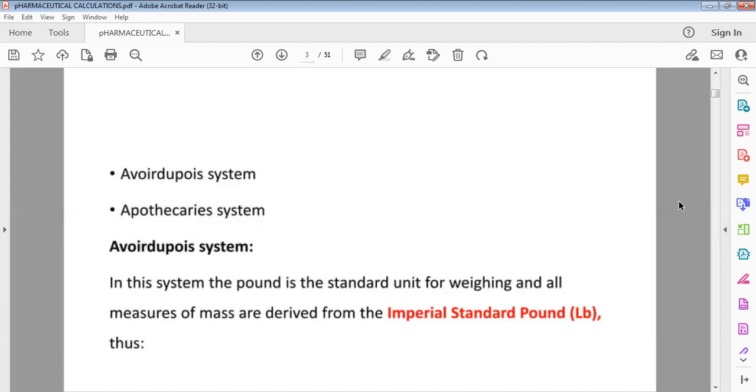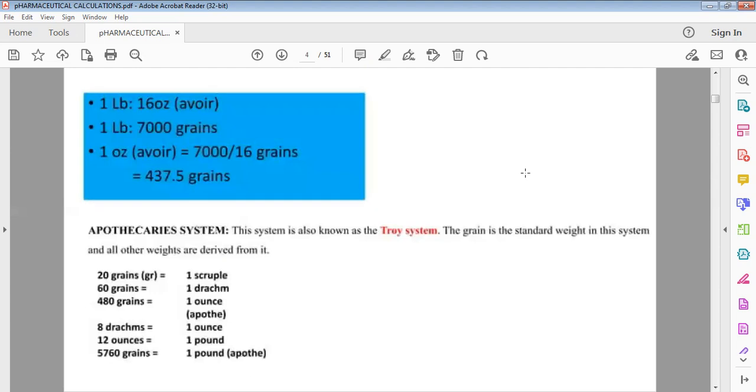In the avoirdupois system, the imperial standard is a pound. A pound means 16 ounces. A pound is equal to 7000 grains. So, one ounce is equal to 7000 by 16, that means 437.5 grains.